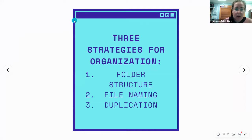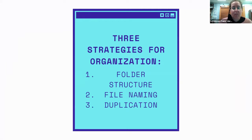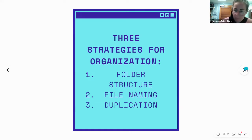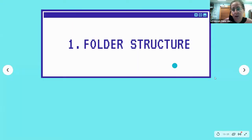These are the three strategies we're going to go over. Once we go over them you're going to say that was pretty straightforward and nothing revelatory — but a lot of people think these are obvious and then don't do them. If you have a plan for them, you're more likely to do them, and once you start implementing these strategies it becomes second nature. The three strategies are: folder structure, file naming, and duplication.